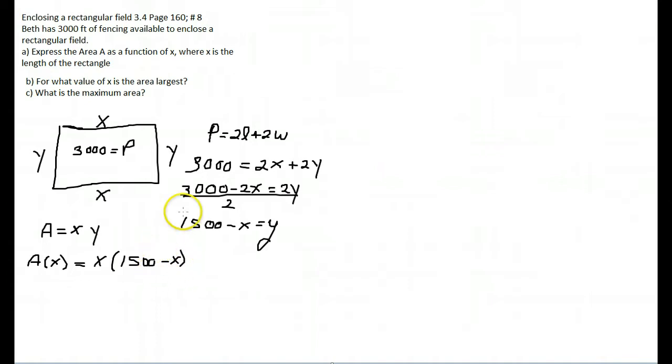Now I could say area as a function of X equals X times 1,500 minus X. I can distribute the X, and so I get A of X equals 1,500X minus X squared, and this is part A right here.